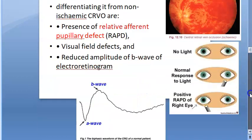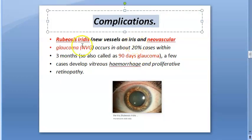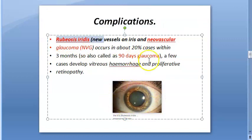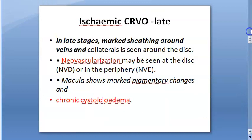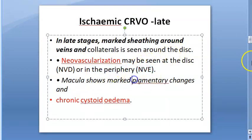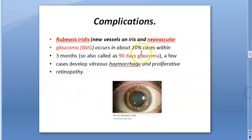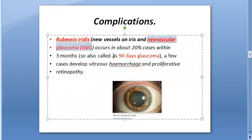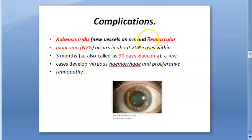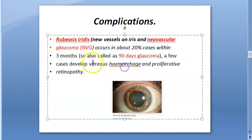Complications of CRVO: if left untreated, rubeosis iridis occurs — new vessels on the iris — leading to neovascular glaucoma. This is called 90-day glaucoma because within three months these new blood vessels develop. Other complications include vitreous hemorrhage and proliferative retinopathy, due to neovascularization on the disc and in the periphery.